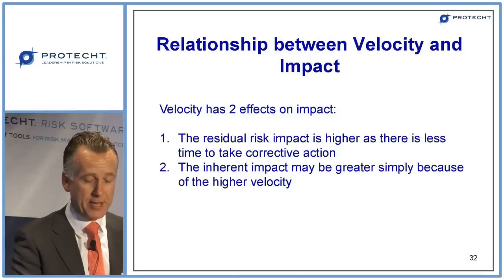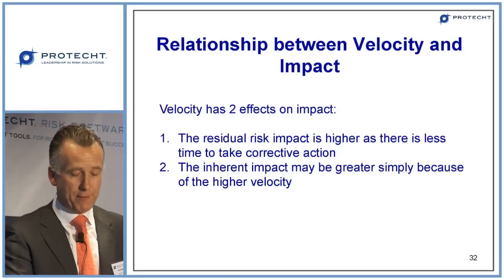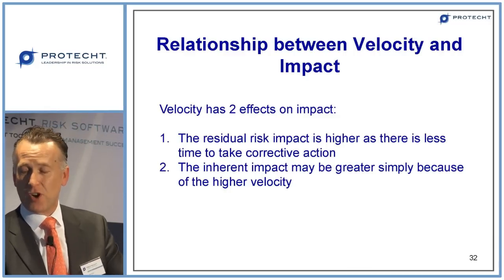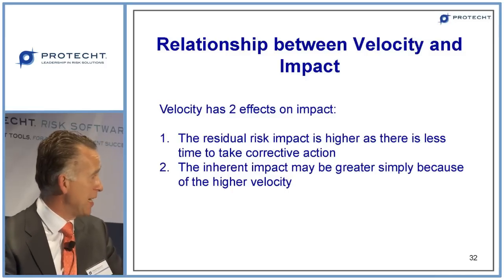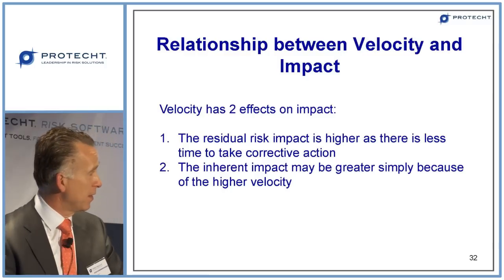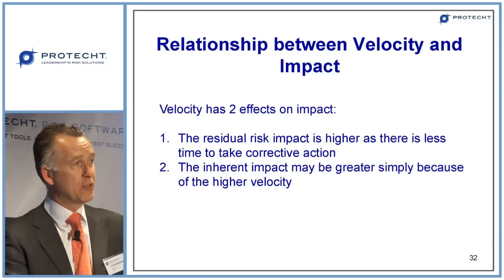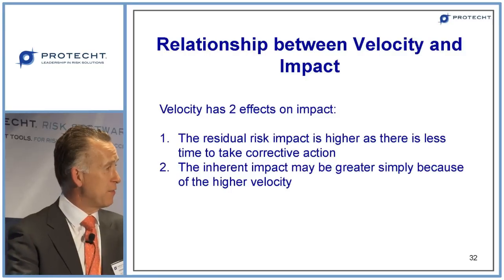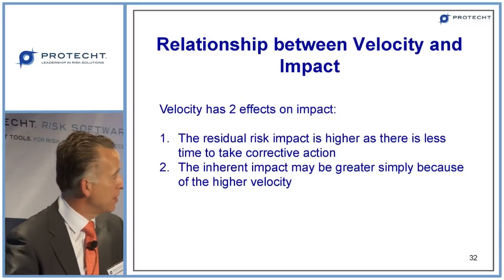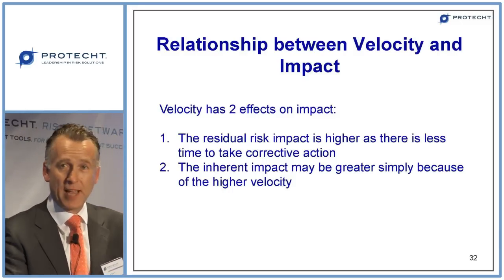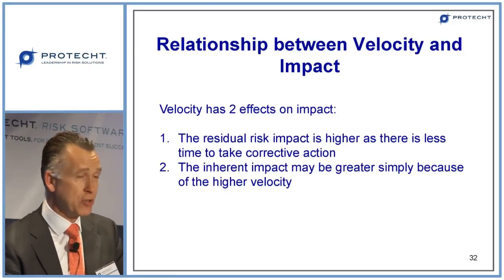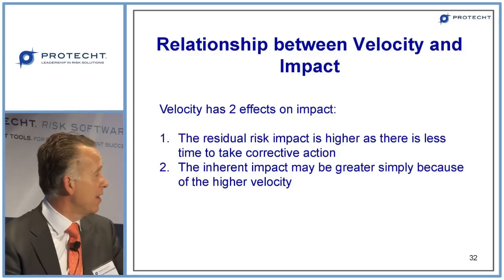In terms of the relationship between velocity and impact, I believe velocity has two effects. Number one: the residual risk impact is often higher as there is less time to take corrective action — we simply don't have enough time to react. Number two: the inherent impact may be greater simply because of the higher velocity. I used to do a lot of hang gliding and one of my key controls was the parachute — I would suggest that is a velocity-reducing control. Its major reason was both: it actually reduced the impact on landing, and it gave you time to think about where you were going to land.